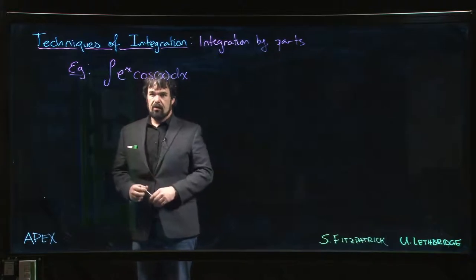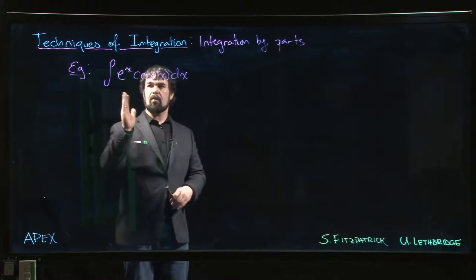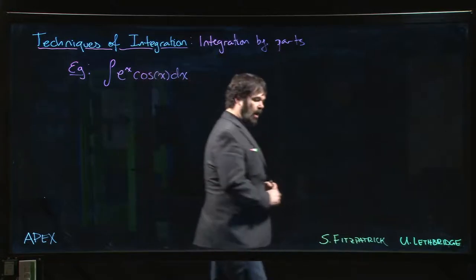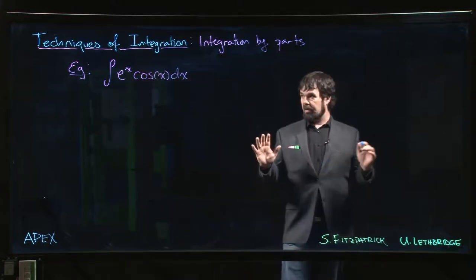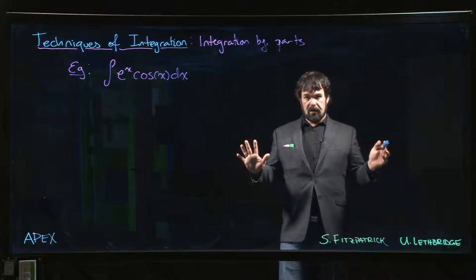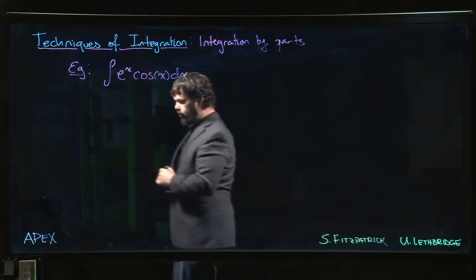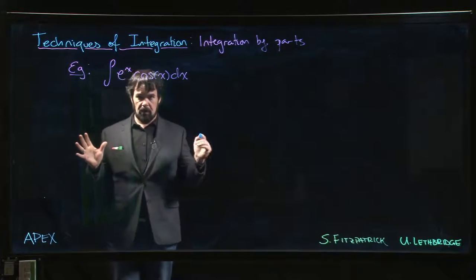So this next example is an interesting one. The product of e to the x and cos x. Now it's interesting in a couple of ways. One is we're going to see that the technique for solving this is a little bit different than what we've seen. It involves a little bit of cleverness.